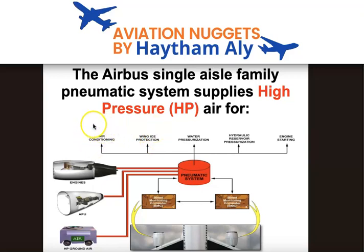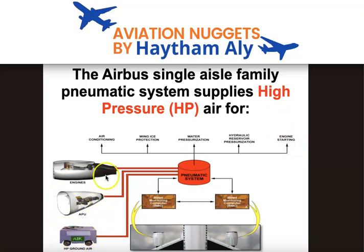Wing ice protection uses hot bleed air. Air conditioning packs always need pneumatic air to operate and to provide fresh air in the cabin and cockpit. The pneumatic system is also used for engine starting — the APU or high pressure ground air may be used to start the main engines, and cross bleed engine start may also occur.